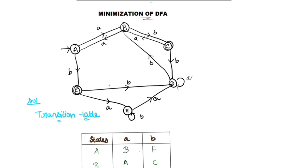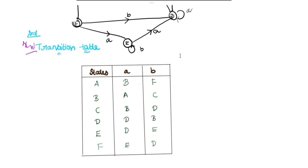We will have a Transition Diagram. We will have the states and inputs. We will proceed with the Transition Diagram. The inputs are A and B.